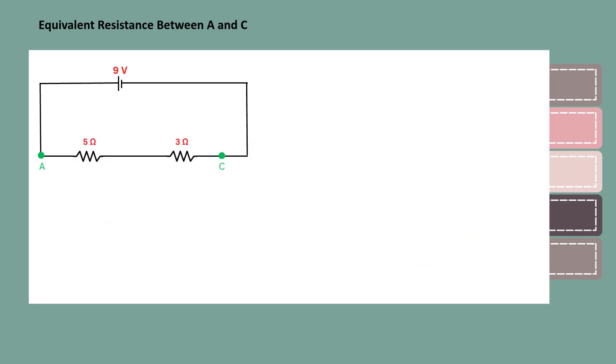In a series connection, to find the equivalent resistance, simply add the resistor values together. So, 5 ohms plus 3 ohms equals 8 ohms.